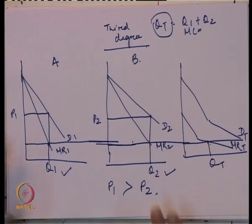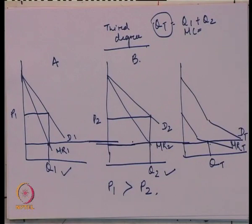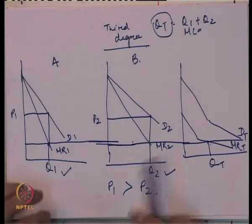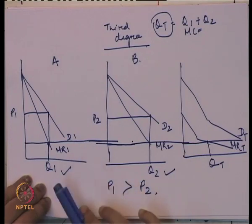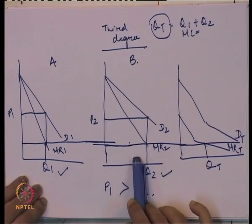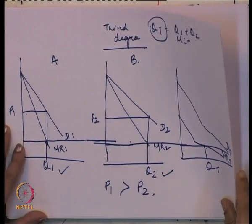The basis of price discrimination is elasticity of demand. A higher price is charged in the inelastic market and a lower price is charged in the elastic market. The producer maximizes profit by charging a higher price in the inelastic market and a lower price in the elastic market.